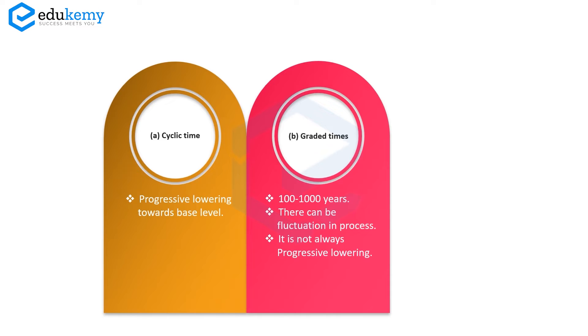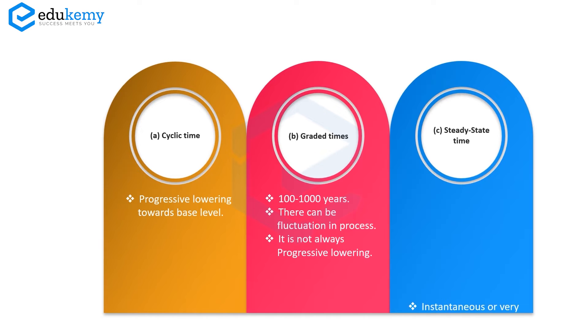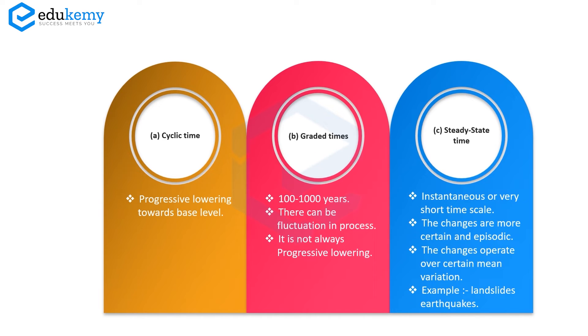In graded time there can be fluctuations. Graded time is not always progressive lowering. And steady-state time - this is more instantaneous and very short time scales. The changes are more sudden, episodic. The changes operate over certain mean variations. Think of landslides, earthquakes.